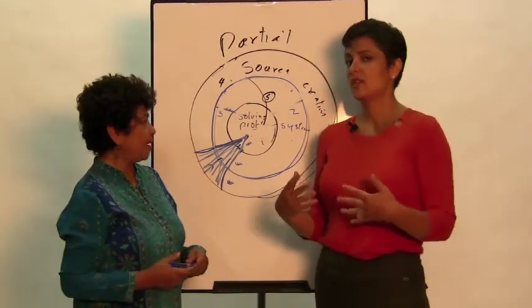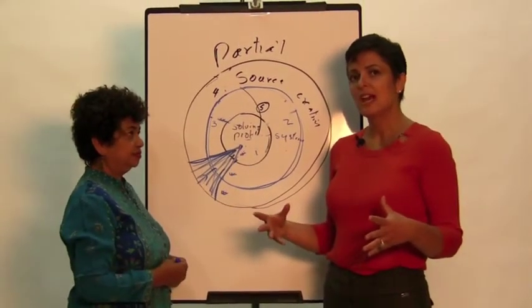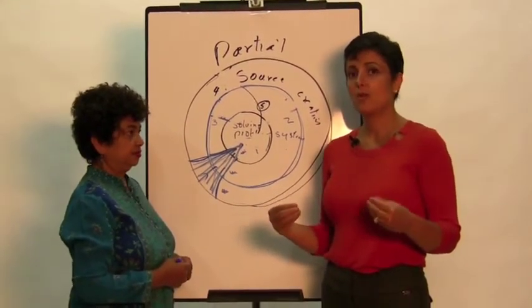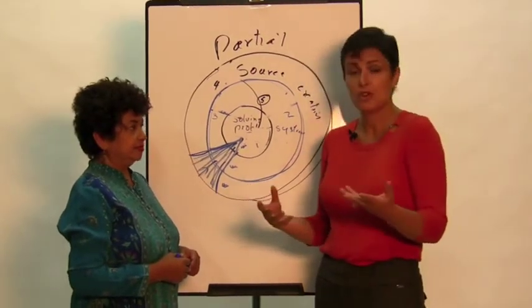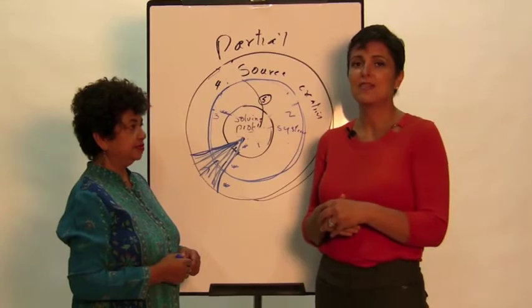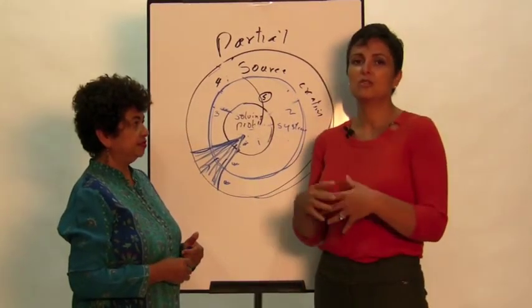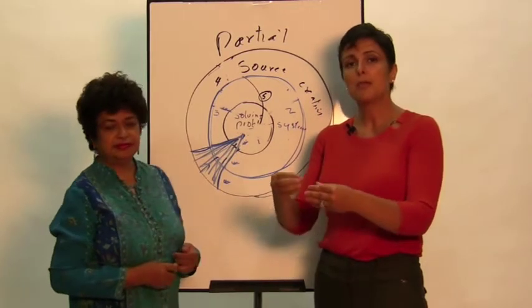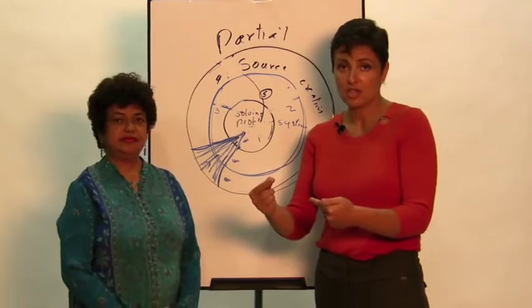Well, you know, one of the projects of United Global Shift is working within the community boards of New York City and actually having people create whatever projects they work on, which they do, always work on projects. There are committees and projects all the time and have them source it from this model so that not only do they do things that will solve an immediate problem, but they build a new system that will then create sustainability around that issue.